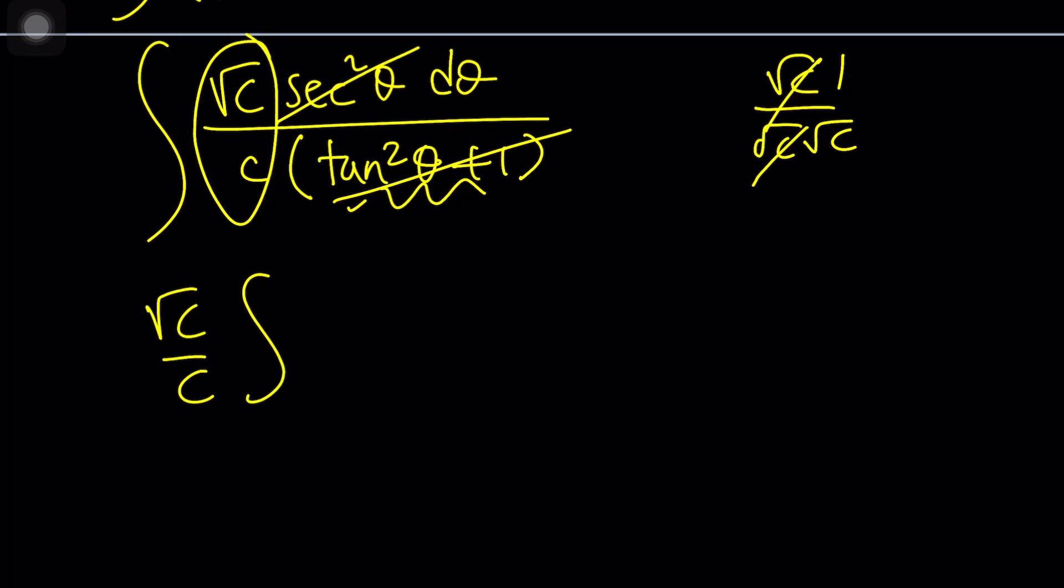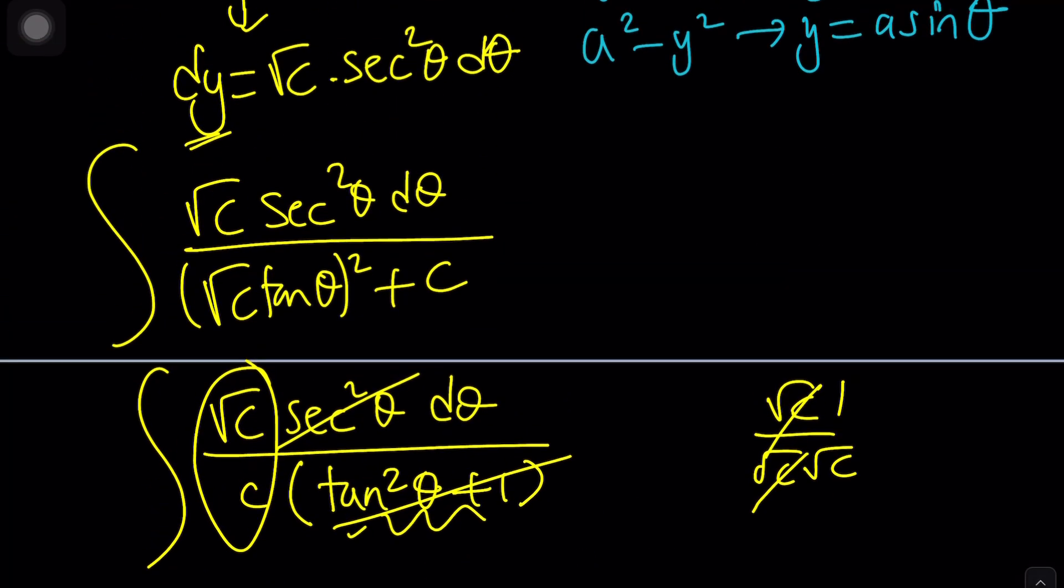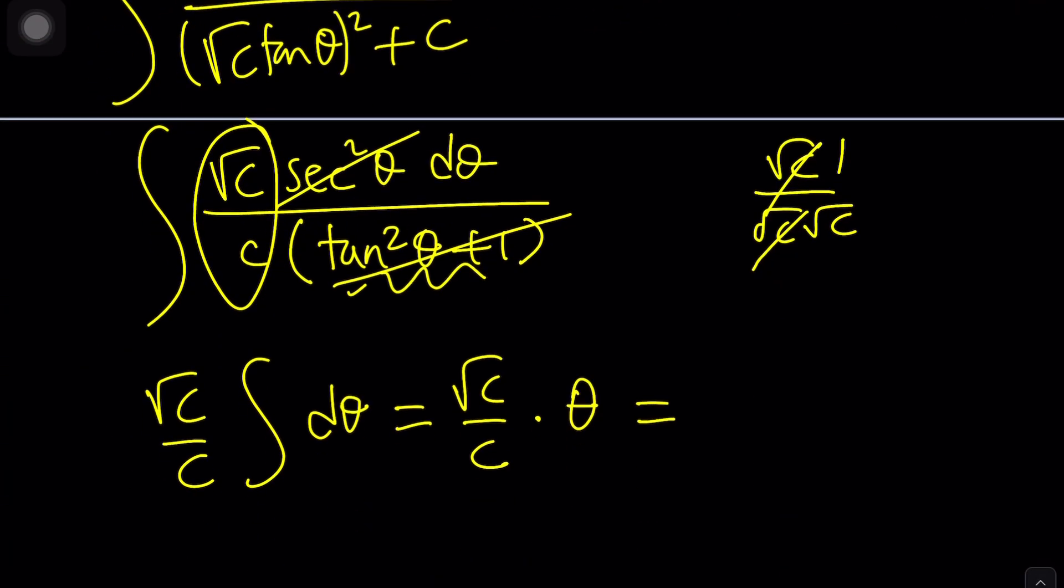Now, we got to integrate what? d theta. How do you integrate d theta? It's just theta. So, root c over c times theta. And on the right-hand side, we have x plus k. Awesome.